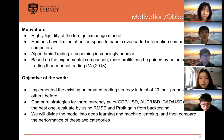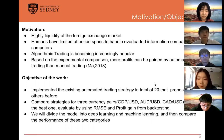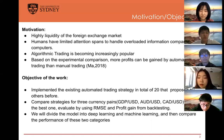Our objective of the work comes from three perspectives. Firstly, we will implement existing automatic trading strategies into the opportunities proposed by others before. Secondly, we will compare strategies for three currency pairs and find out the best one, evaluating it using RMSE and profit gain from backtesting. And lastly, we will divide the models into deep learning and machine learning and compare the performance of these two categories.